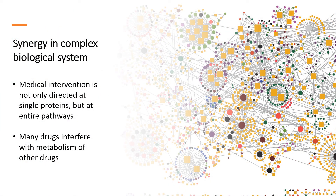In real life, the situation is more complicated, as mechanisms of enzyme or receptor activity are more complex. Furthermore, medical intervention is not only directed at single proteins, but at entire pathways or controlling structures, such as transcription factors, that initiate or control biochemical processes. Some therapies, such as cancer chemotherapy, interfere with a complete living organism. In addition, many drugs interfere with the metabolism of other drugs, including drug absorption, tissue distribution, and clearance.